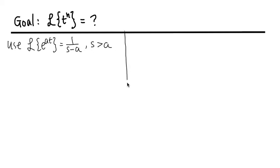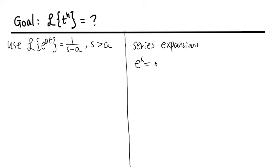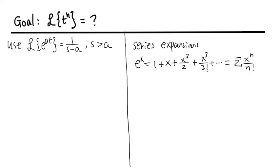Along with this, we also need some other tools — specifically some series expansions. The first one that we need is e to the x, and e to the x is 1 plus x plus x squared over 2 plus x to the third power over 3 factorial, and so on. In sigma notation this is the sigma of x to the n power over n factorial, where n goes from 0 to infinity.